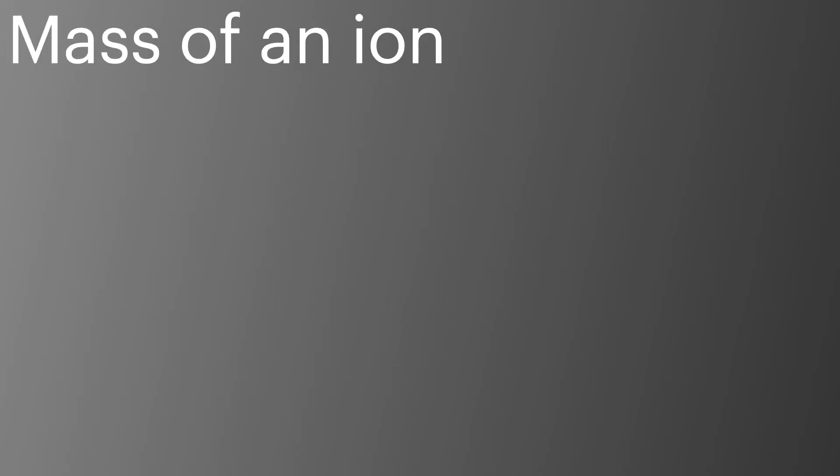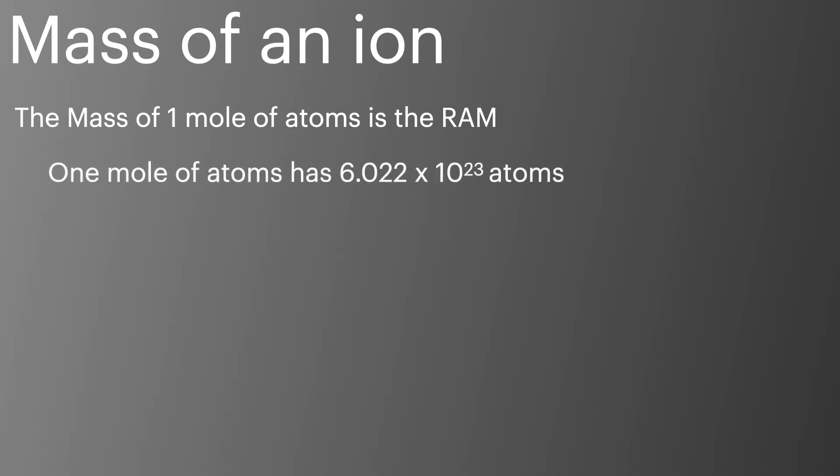When using the equation for kinetic energy, we need to be able to calculate the mass of one atom or ion. The mass of one mole of atoms can be found on the periodic table as a relative atomic mass. Every mole contains 6.022 times 10 to the 23 atoms. This is Avogadro's constant. So if you divide the relative atomic mass by Avogadro's constant, then you have the mass of one atom in grams.